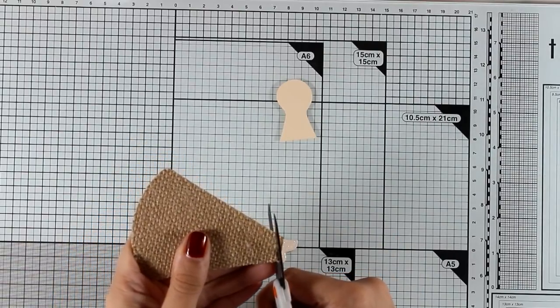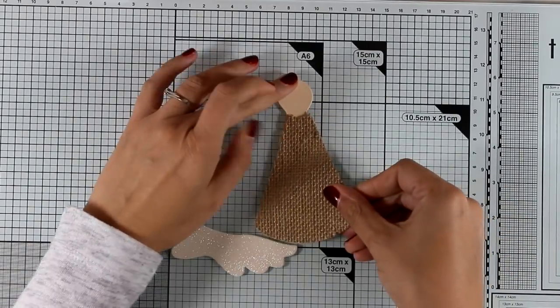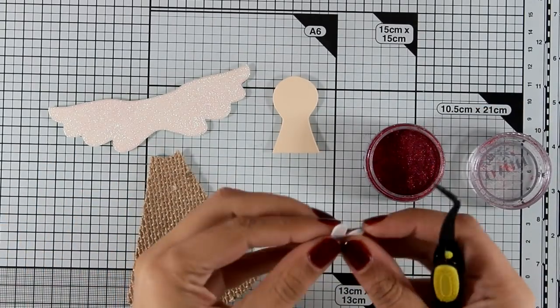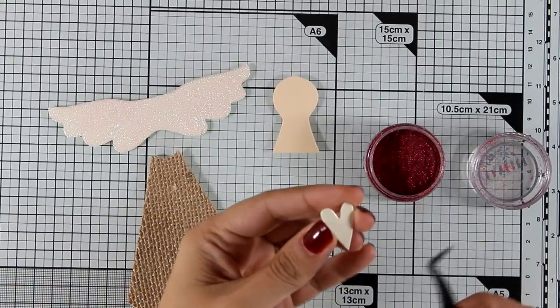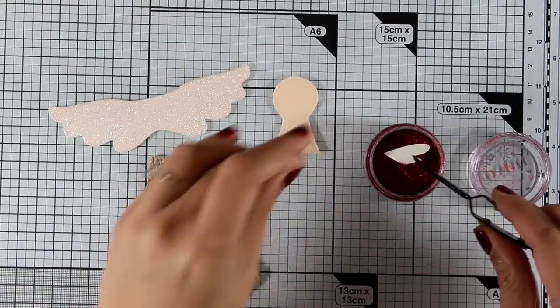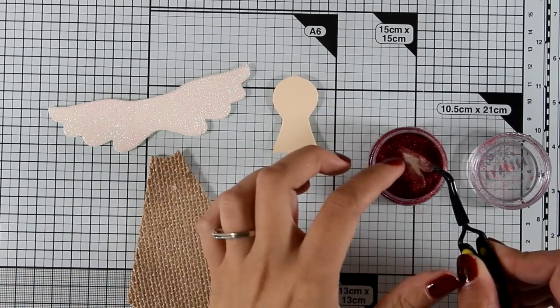I am using my scissors at the top of the dress and I'm going to give a little bit of curve there. I'm doing the exact same thing as I did with the wings of my angel. I'm going to cover up completely the cut-out heart with glitter, but this time I'm using red glitter.